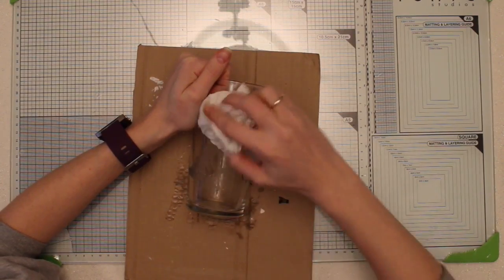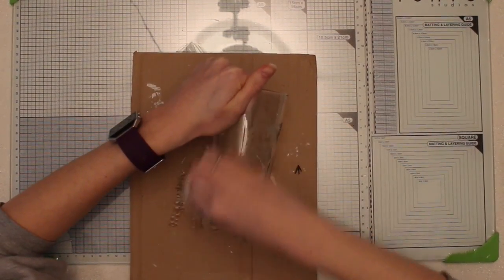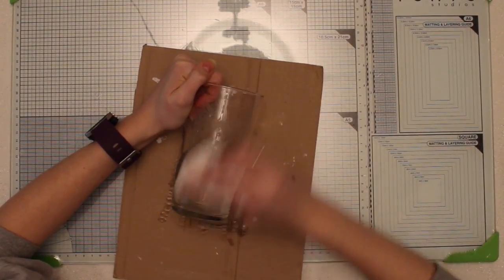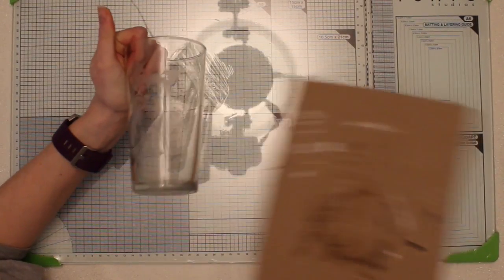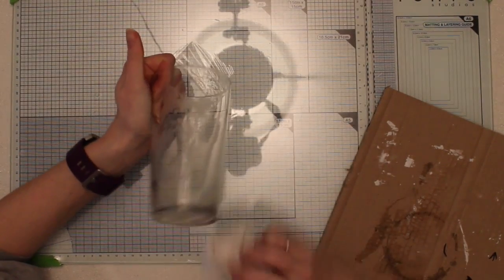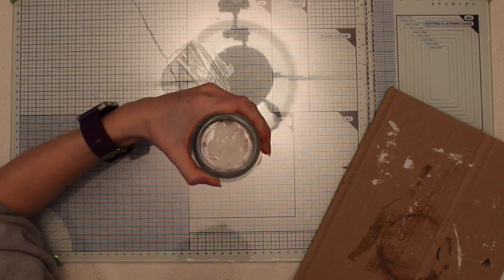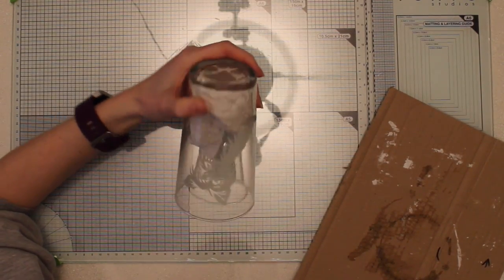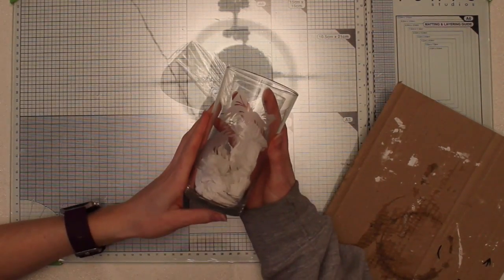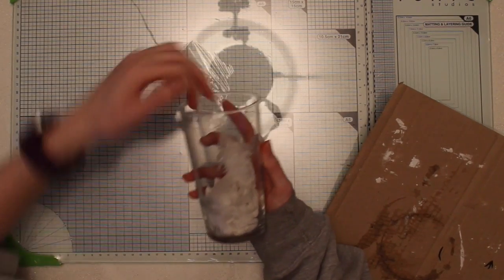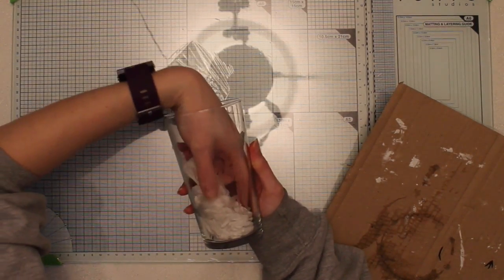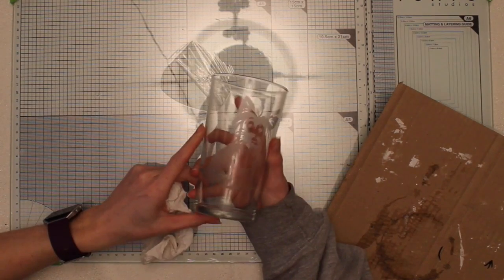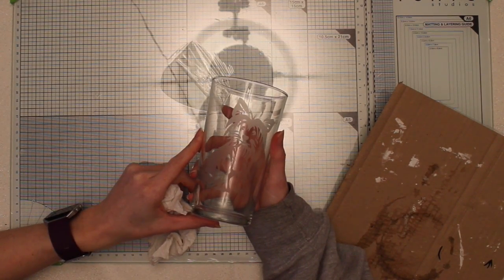If you've got any sticky residue left behind from your vinyl then just give it a good old wipe. I use some glass cleaner and a bit of kitchen roll and this will just help make sure that any etching cream that had perhaps worked its way into the vinyl is removed also. Now it's quite hard to show you the image on camera so I'm going to show you a few still photos at the end of the video.